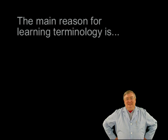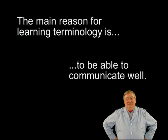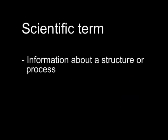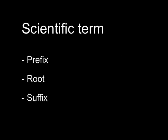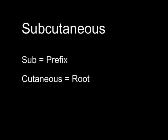You must know the language of a particular field to be successful in it. Each field has specific names for specific structures and functions. Unless you know the names and their meanings, you'll have trouble saying what you mean and understanding what others are saying. A scientific term is a word that names or gives special information about a structure or process. Some scientific terms have two or three different parts — known as a prefix, a root, and a suffix. Consider the word subcutaneous.